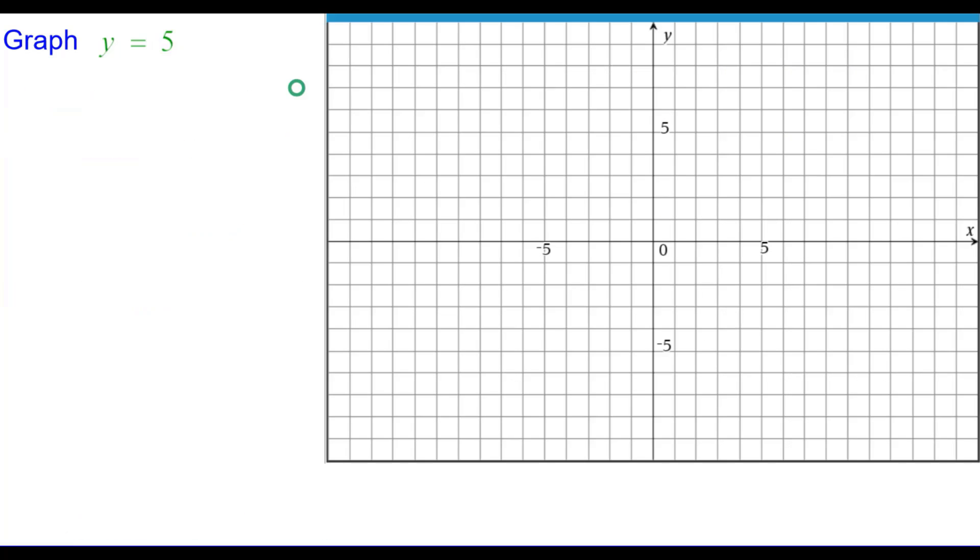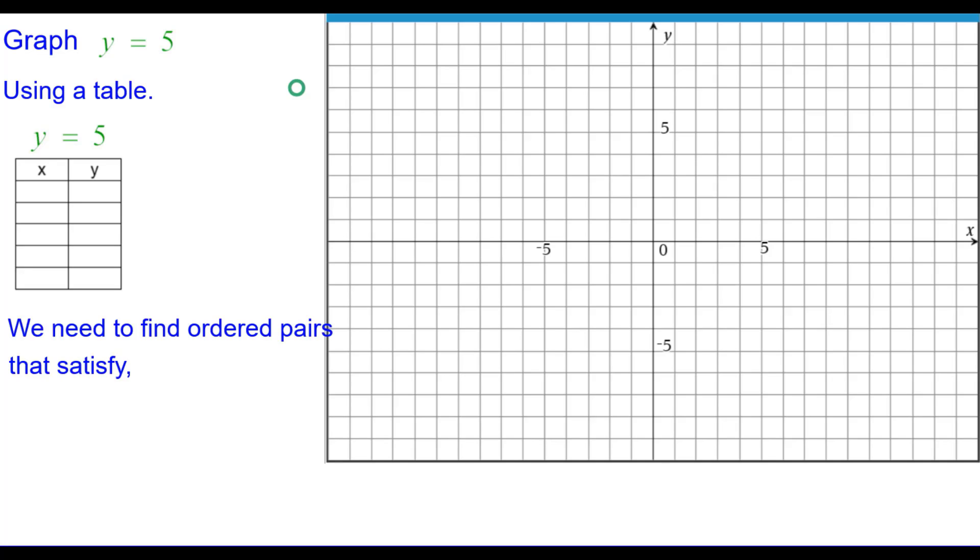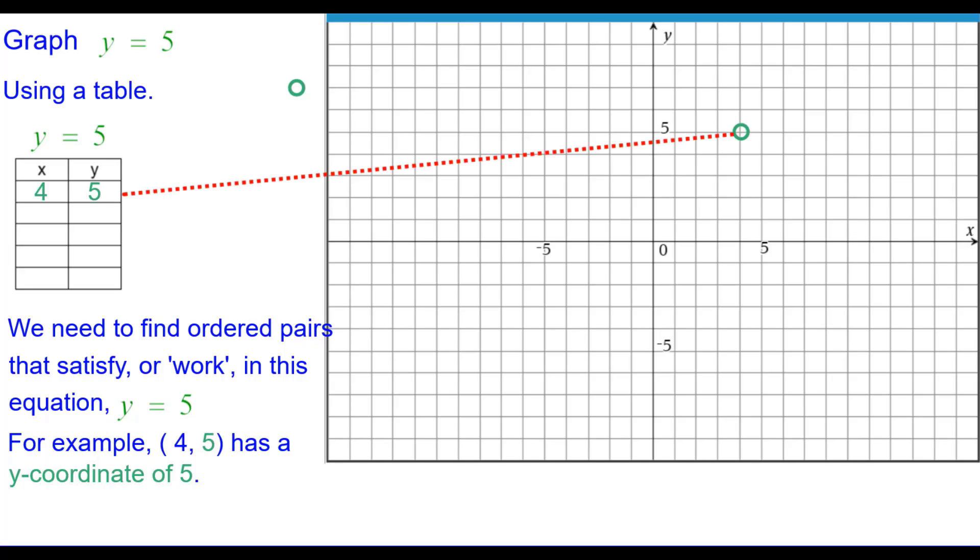Let's graph y equals 5. We'll use a table and we need to find ordered pairs that satisfy or work in this equation, y equals 5. For example, the ordered pair has a y coordinate of 5, so we can put that in the table and plot it over 4, up 5.